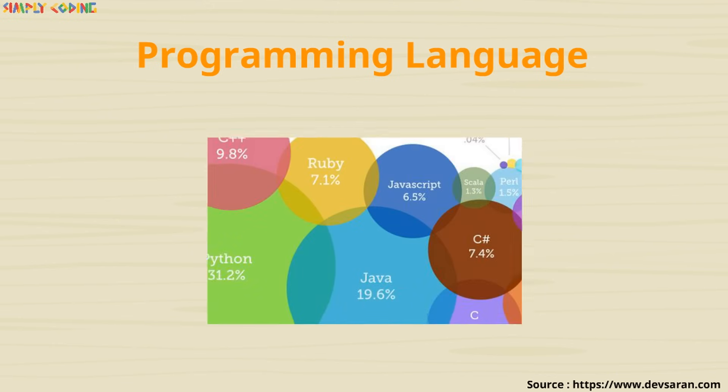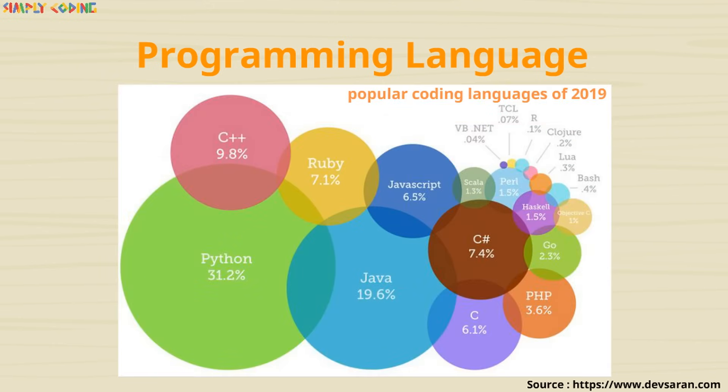There are many different programming languages and as per latest data, Java is one of the most popular languages that is being used for coding.